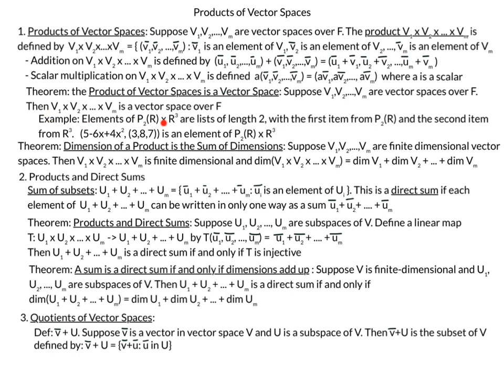For our first example, we have elements of the cross product of the vector space P2 — polynomials of degree 2 or less — crossed with R3. The elements are lists of length 2 with the first item being a polynomial of degree 2 or less and the second item a vector in R3. An example is 5 minus 6x plus 4x squared paired with the vector (3, 8, 7).